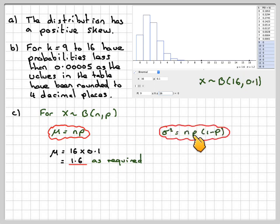The variance is given by np(1-p). So that's going to be 16 times 0.1 times (1 minus 0.1), which gives me 1.44. In order to find the standard deviation of that, I need to take the square root, which will give me 1.2, which is the value here given in the table.